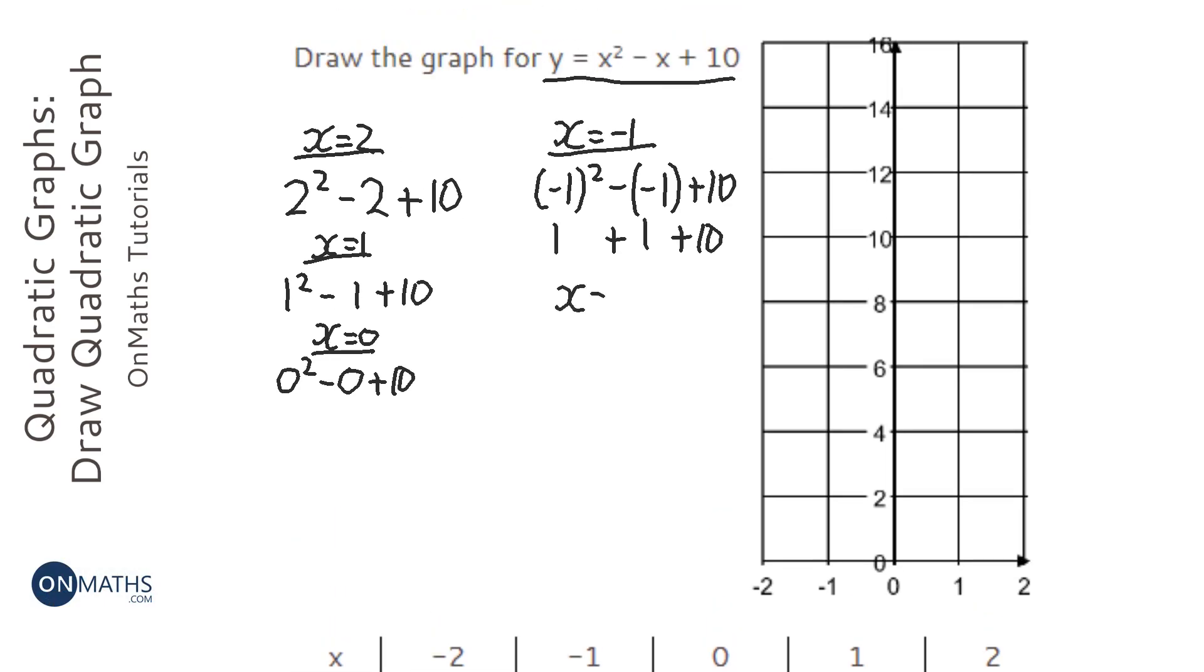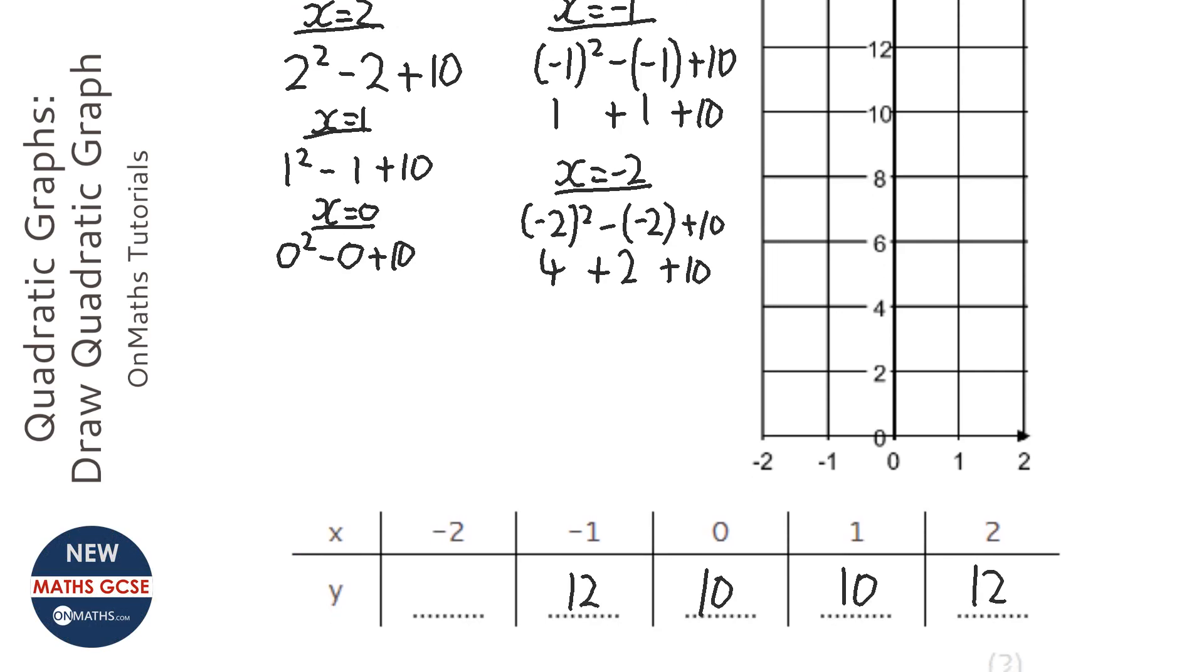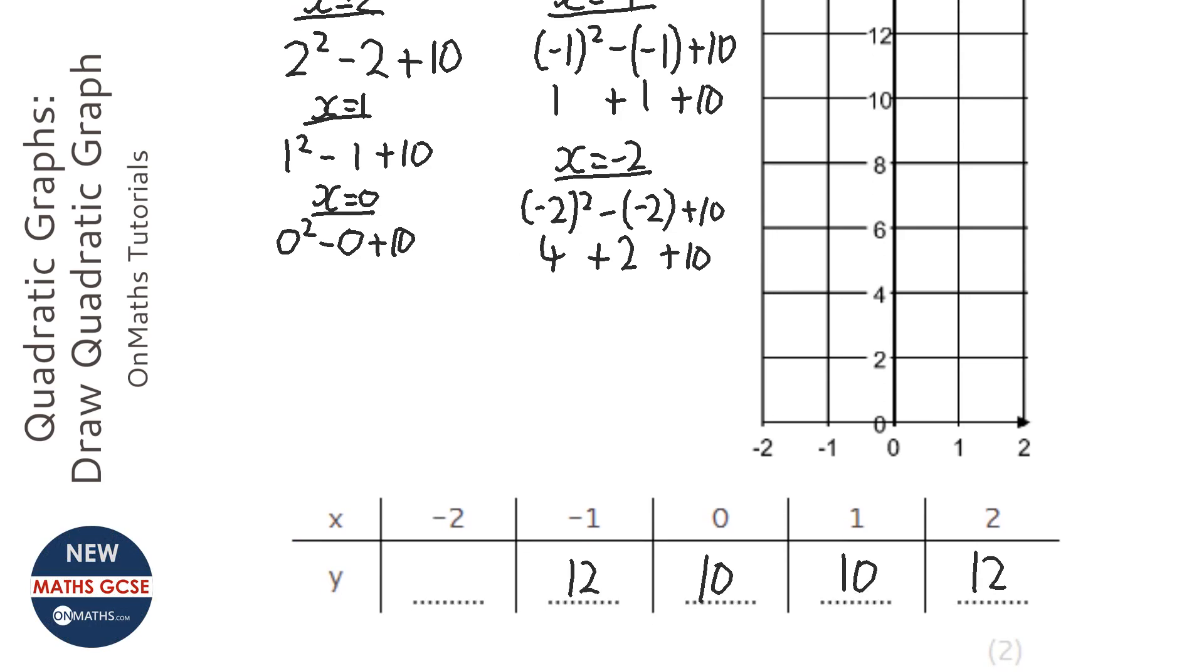And when x is negative 2, it's going to be negative 2 squared minus negative 2 plus 10, which is 4 plus 2 is 6, plus 10 is 16.